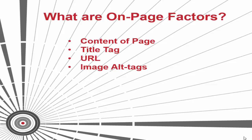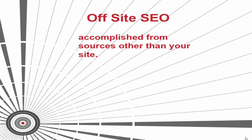Many business owners aspiring for high search engine placement fail to realize that the most important aspects of optimizing their website actually do not take place on the site. With so many SEO companies trying to manipulate search engine results in the past, Google and other major search engines now determine the value and importance of sites based on the links they receive from other sites. Off-site SEO is achieved from sources other than your site to increase search engine performance for target keywords related to your on-page content.